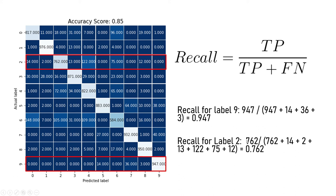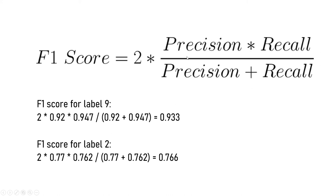For label 2, the true positive was 762. For false negatives, we look at samples actually label 2 but predicted as something else — 14 predicted as label 0, 2 others, 13 more, and 122 predicted as other labels. The false negatives are 14 + 122 + 75 + 12, giving a recall of 0.762 for label 2. We only showed precision and recall for labels 9 and 2, but you can use the same method for every label. The F1 score is 2 × precision × recall / (precision + recall), giving 0.93 for label 9 and 0.766 for label 2.